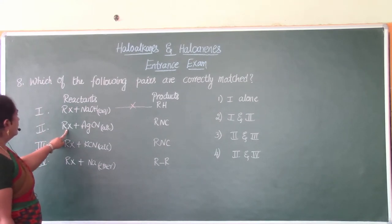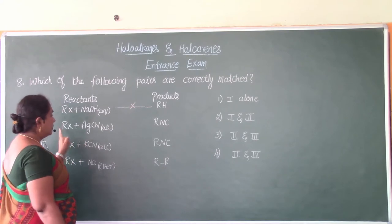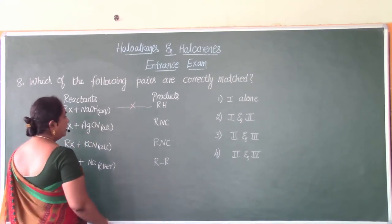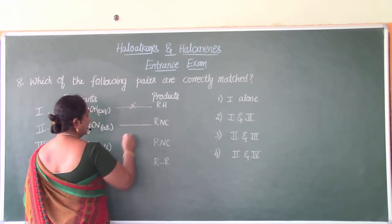Now the second one, RX plus alcoholic AgCN, RX plus alcoholic silver cyanide. It is forming isocyanide, alkyl isocyanide. Yes, this is correctly matched.